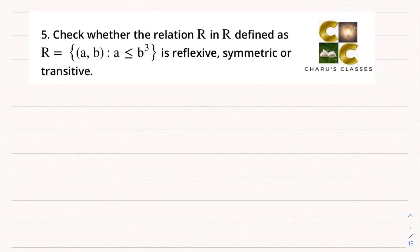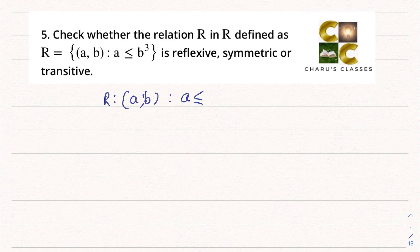Hello students, welcome to Charu's classes. Today we are continuing with question number 5, exercise 1.1, relations and functions. Check whether the relation R in R defined as R = {(a,b) : a ≤ b³} is reflexive, symmetric or transitive. The relation R in R — here this capital R is for the real numbers.